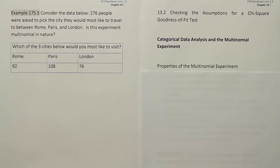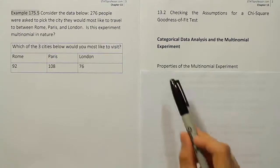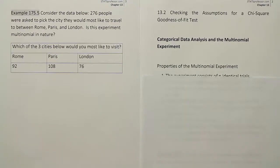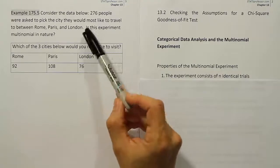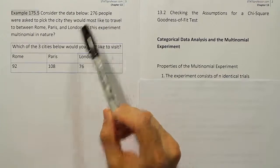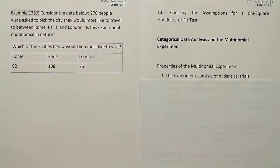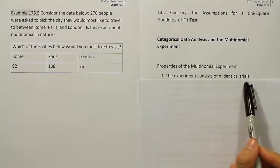All right, so let's check the properties again. Let's do them one by one. So the properties of the multinomial experiment, the first one is going to be the experiment consists of n identical trials. Yeah, I think that's correct in this problem. We're going to look at exactly 276 people's preferences. So that's a specific number of trials or cases that we're going to consider.